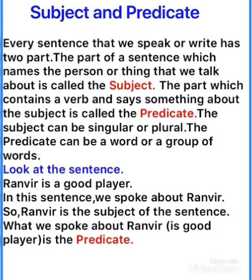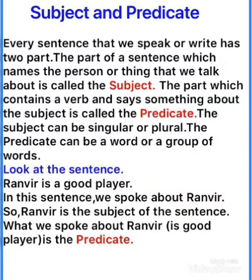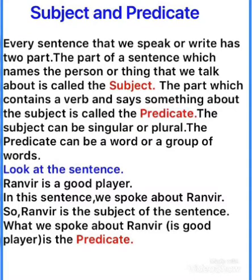Aisa hi jo second example hai: 'This dog runs fast.' So baat kis ke baare mein ho rahi hai? Dog ke baare mein. And who is subject here? Dog. So dog kya hua? Subject. Baat ho rahi hai dog ke baare mein, aur uski speciality ke baare mein — ke woh jo dog hai, runs fast, bahut tez daurta hai. So predicate mein kya aagaya? Woh kya karta hai, kya kaam ho raha hai — verb hai. Jaise upar wale sentence mein bhi fly verb hai, second mein runs verb hai.